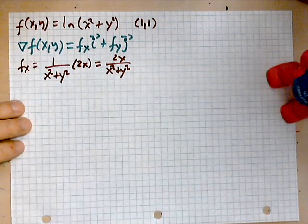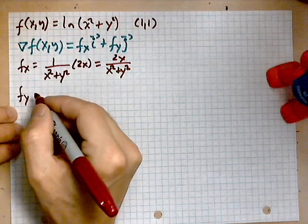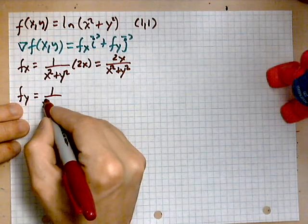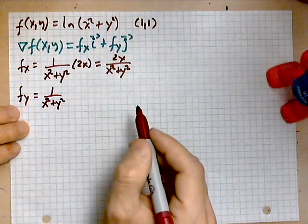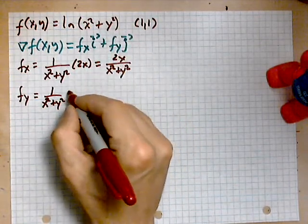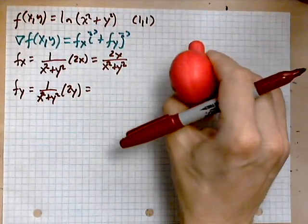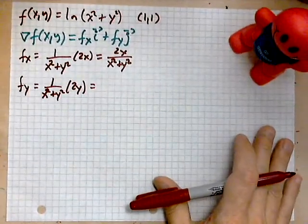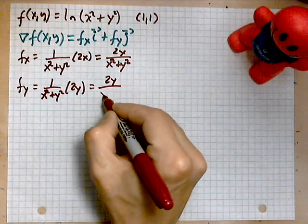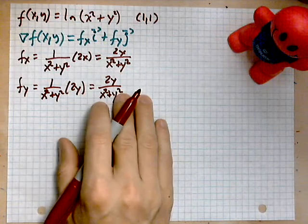The next step is to repeat the procedure for the second one. So we have fy equals 1 over (x² + y²), and then you multiply by the partial with respect to y which is just 2y. This gives now 2y over (x² + y²). So these are the components of the gradient. Now we plug them into the gradient and we form the gradient.